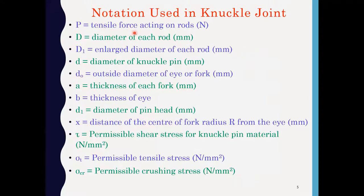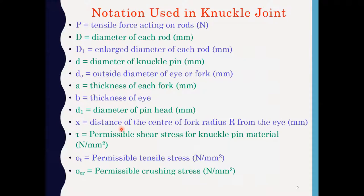P is the tensile force acting on the rod. D is the diameter of each rod. D1 is the enlarged diameter of each rod. D is the diameter of knuckle pin. D0 is the outside diameter of the eye or fork. A is the thickness of each fork. B is the thickness of eye. D1 is the diameter of pin head. X is the distance of center of the fork radius from the eye. Tau is the permissible shear stress for the knuckle pin. Sigma T is the permissible tensile stress and Sigma CR is the permissible crushing stress.